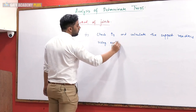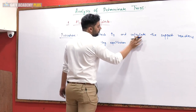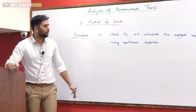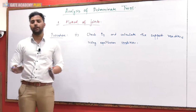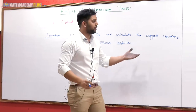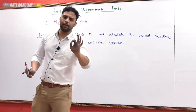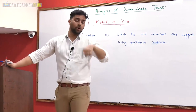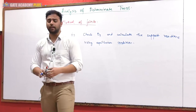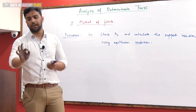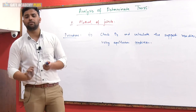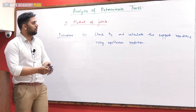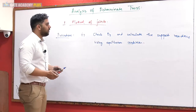Using equilibrium conditions — summation Fx equals to 0, summation Fy equals to 0, and summation Mz equals to 0 — we calculate the external support reactions.